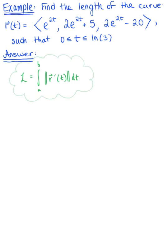Given this vector-valued function, let's start by finding the tangent vector by differentiating. The x component of the tangent vector is 2 times the natural exponential raised to the 2t. The y component becomes 4 times the natural exponential raised to the 2t. And the z component also becomes 4 times the natural exponential raised to the 2t.